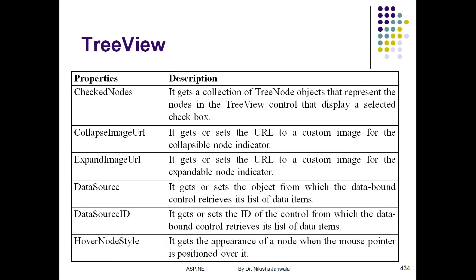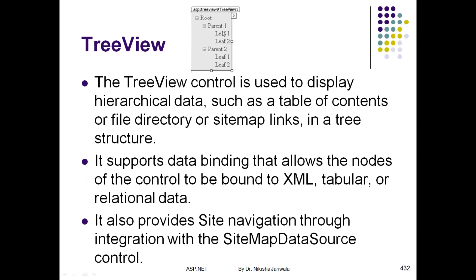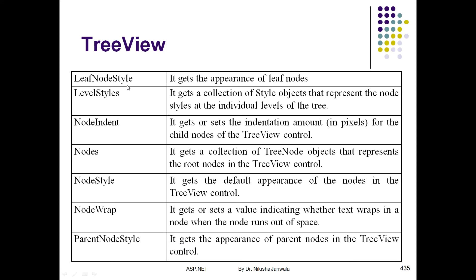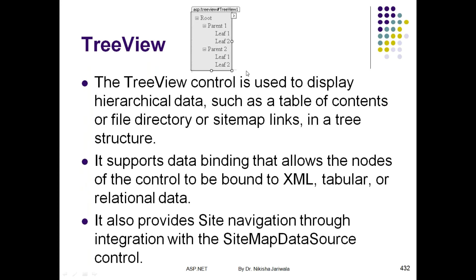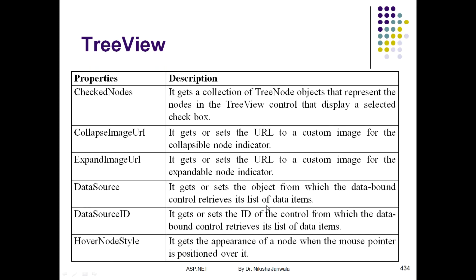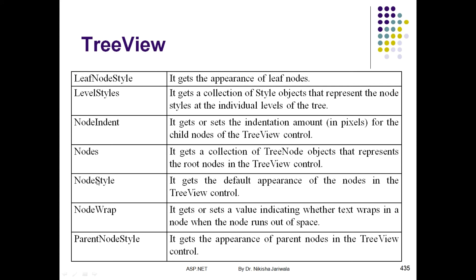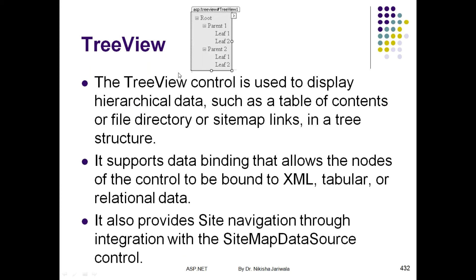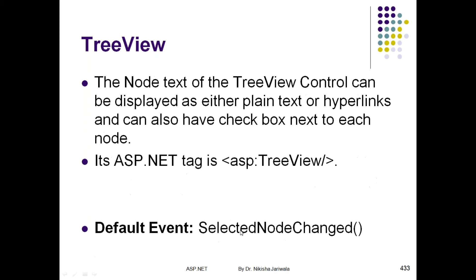Another property is HoverNodeStyle — for example, when hovering over a node, you can specify the style to change the appearance. Another is LeafNodeStyle — to set the style of leaf nodes. Another is ParentNodeStyle — to set the style of parent nodes. And there is also RootNodeStyle — to define the appearance of the root node in the TreeView.